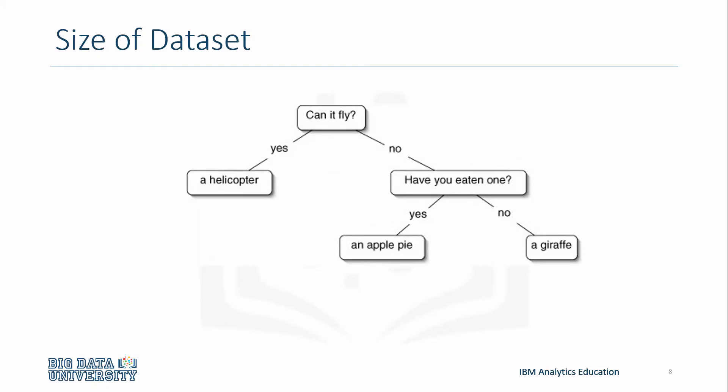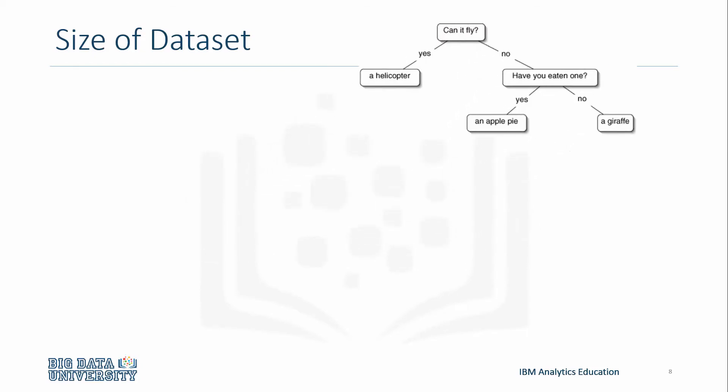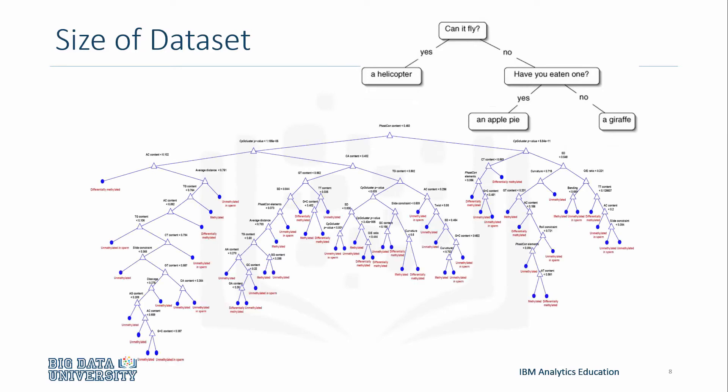Let's take this decision tree for an example. Now imagine we increased the dataset by a large amount and created a tree that looked like this. Comparing the size of these trees, the second one is multitudes larger than the first. If the first tree took a couple of minutes to classify and build, this tree might take a couple of hours or even days.